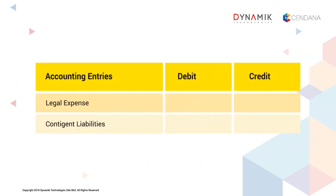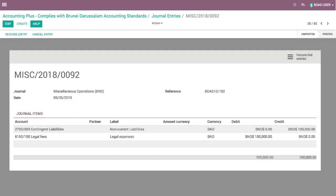The legal expense is $100,000. Accounting entries are such that debit the legal expense with $100,000 and credit the contingent liabilities with the same amount. A complete draft of the journal entry transaction in Accounting Plus will look like this. Do note the journal ID created from the system for future reference.